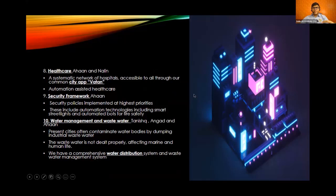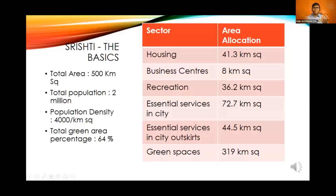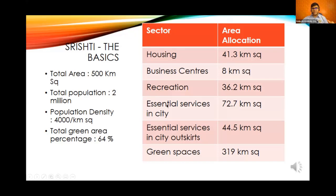Coming to the basics of the city, to design the basics we looked at the Economist Intelligence Unit's yearly reports on sustainable development where they rank the most sustainable cities in the world. From there we took the model of Vienna, which has been consistently ranked the most sustainable city, to get our total area of 500 km² and decide our total population, making our city a metropolis. Our total green area percentage is much higher than any other city in existence at 64%.